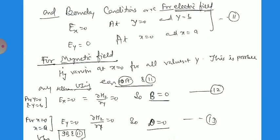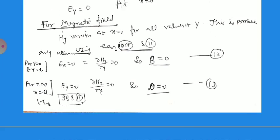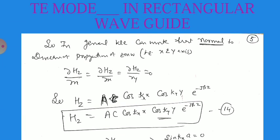With D equals zero and B equals zero, both sine terms are removed from the formula. The simplified expression is: hz(x,y) equals A·C·cos(kx·x)·cos(ky·y), and ∂hz/∂x and ∂hz/∂y can be evaluated from this form.